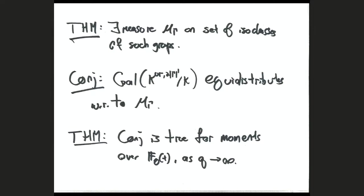Q: Does the fact that it's true for moments imply the statement for the full distribution? When I say 'true for moments,' it doesn't literally prove the full function field statement — partly because we're taking a limit as q goes to infinity. But morally we take this theorem as very strong evidence for our conjecture. And since our conjecture abelianizes to Cohen-Linstra–Martinet, that's why we take it as strong evidence for Cohen-Linstra–Martinet as well.